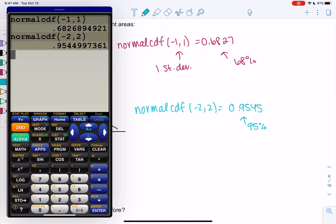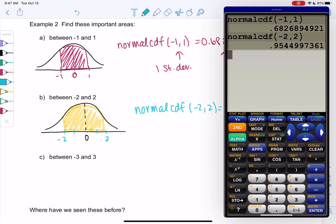All right, and the last one, we're going to do three standard deviations. So between negative 3 and 3, so that's where the tails are. So again, it's almost 1 because it's almost the whole curve.